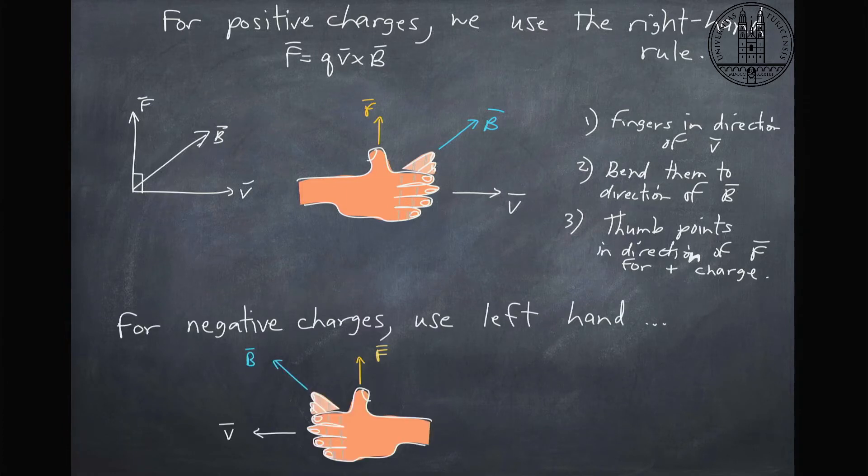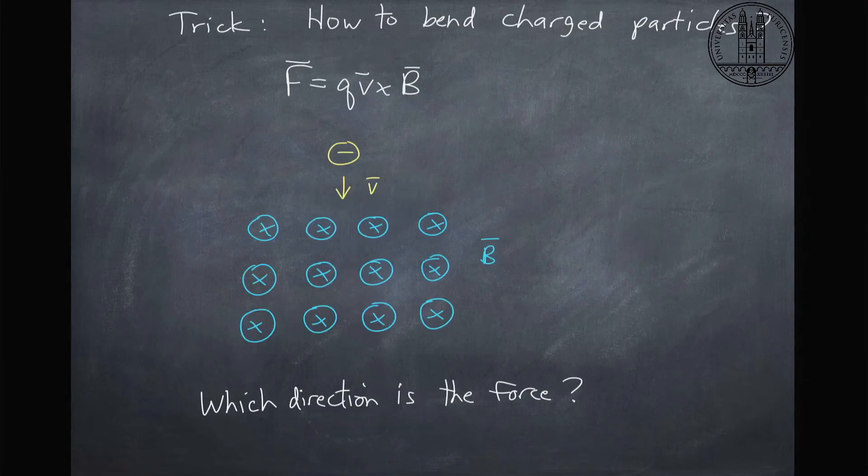If you have negative charges, like we do when you have electrons, then you would use your left hand to do this. So looking at our example, the velocity is pointing downward, the charges are negative, the magnetic field is pointing in. I can bend my fingers in the direction of the velocity, then bend them toward magnetic field, and the force should be to the left.